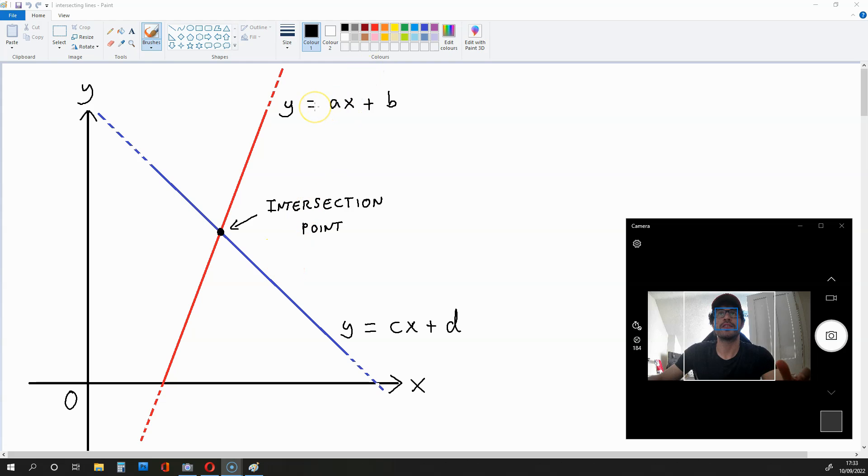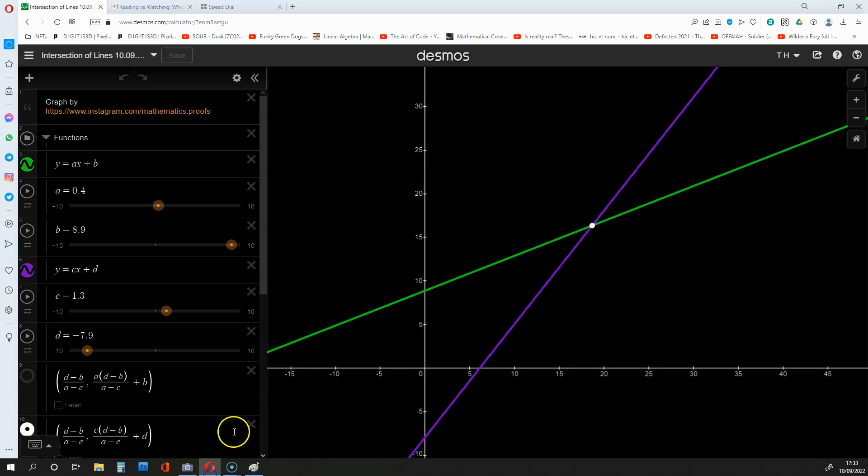Let's find where two lines intersect on a two-dimensional graph. This line in red is going to be represented by Y equals AX plus B. And this line in blue is going to be represented by Y equals CX plus D. And what we're looking for is the intersection point here. If we can find it, we'll be able to replicate this graph on Desmos, which is pretty cool.